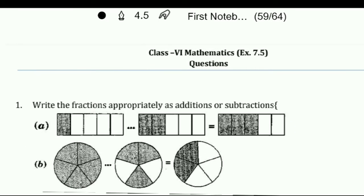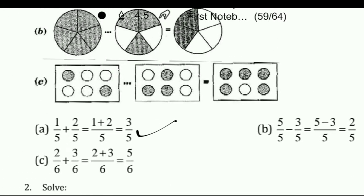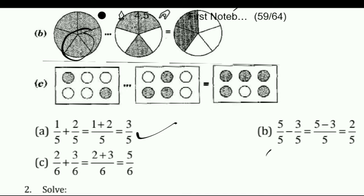Next, addition and subtraction of fractions. Write the fractions appropriately as addition or subtraction. The first figure has 5 parts with 1 part shaded — that is 1 upon 5. Then 2 more parts are shaded — 1 by 5 plus 2 by 5 equals 3 by 5. Like this we can write. Next figure has all 5 parts filled, then minus 3 upon 5, so 5 minus 3 is 2 by 5. Like this you can solve.